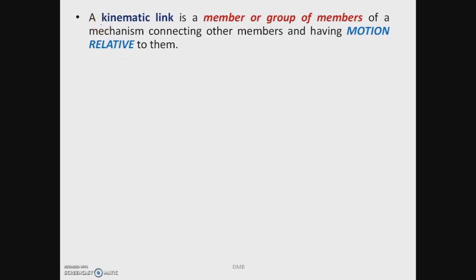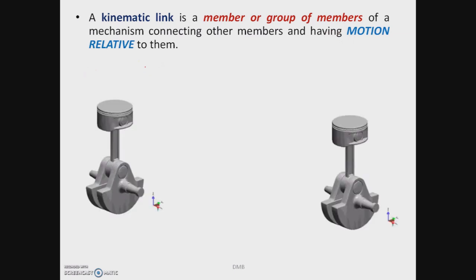Let us define a link. A kinematic link is a member or group of members of a mechanism connecting other members and having motion relative to them. In this reciprocating engine mechanism, the slider is connected to the connecting rod, the connecting rod is connected to the crank. All three links are individual links having relative motion with respect to each other — these are examples of kinematic links.